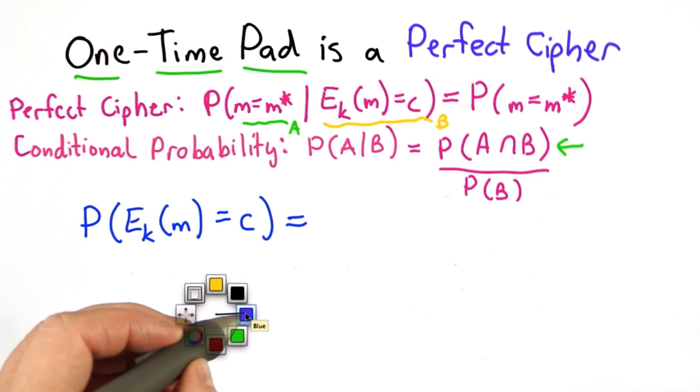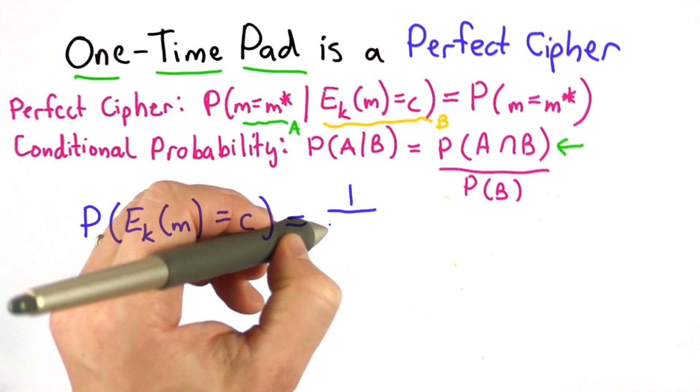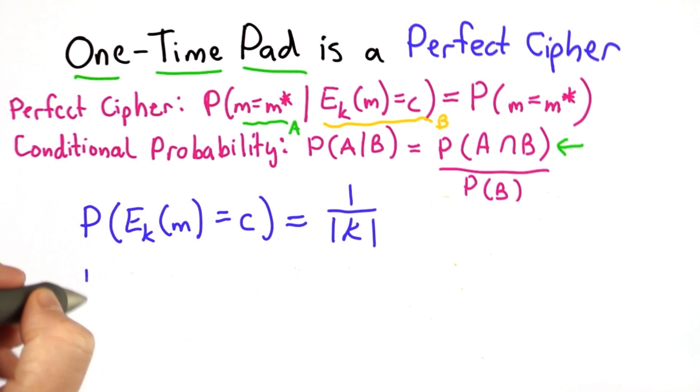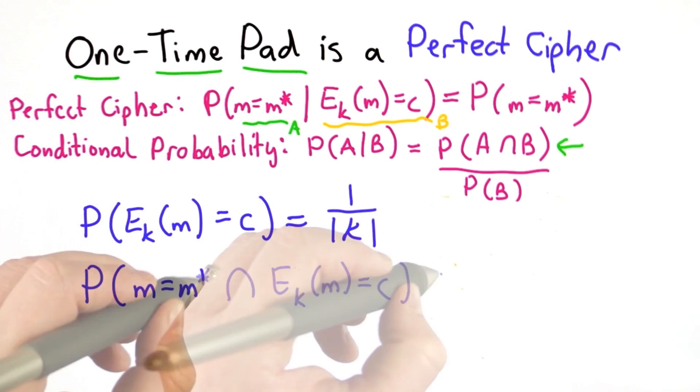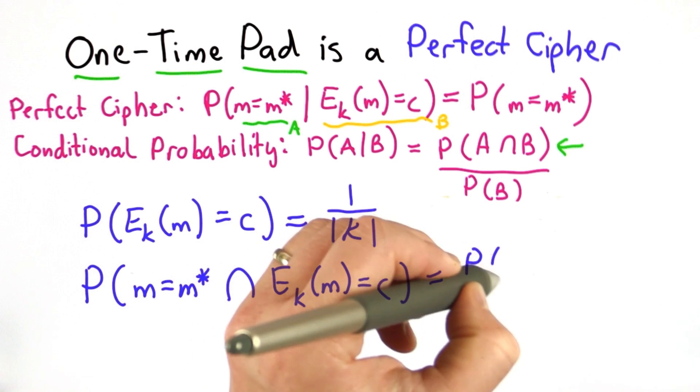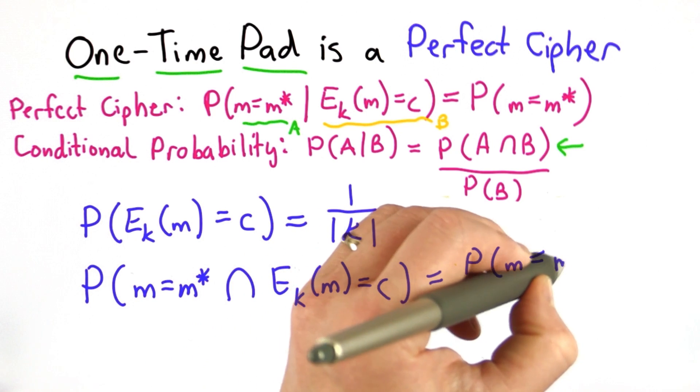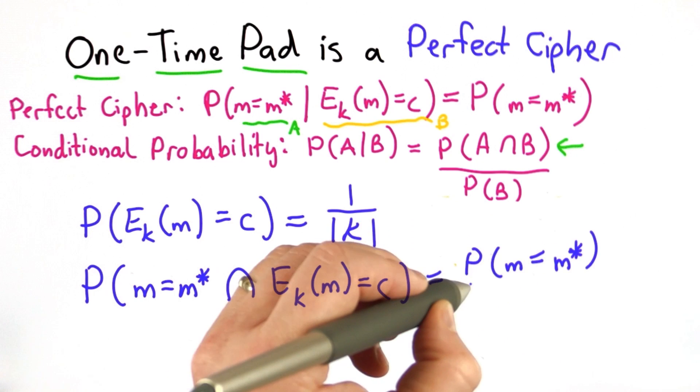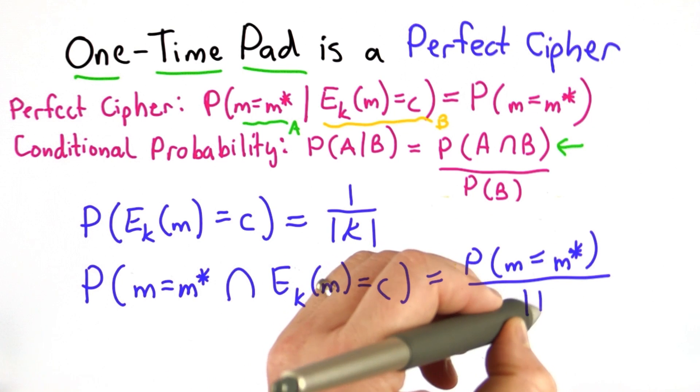So we showed earlier that this was 1 over k, 1 over the size of k. Now we've shown that the probability of m equals m star is equal to probability the message is m star divided by k.